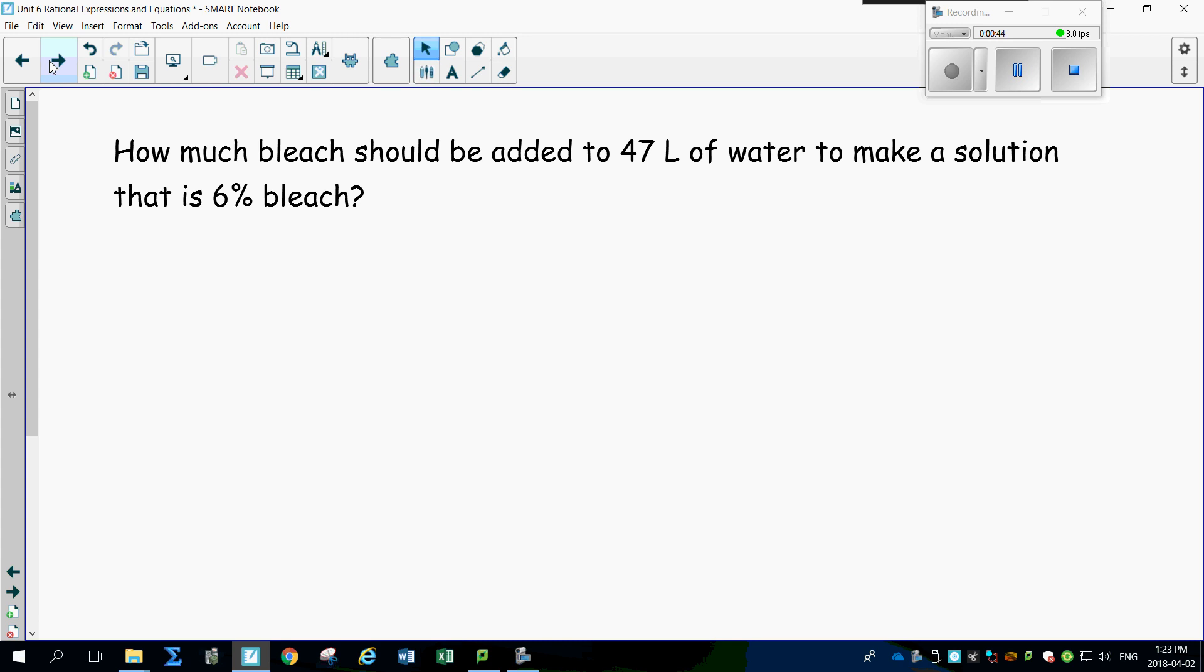Plus, concentrated bleach is very dangerous, so what they do is they dilute it before they sell it to a consumer to a safe level which still cleans your clothes but isn't as dangerous. So here we go. The question is: how much bleach should be added to 47 liters of water to make a solution that is 6% bleach?